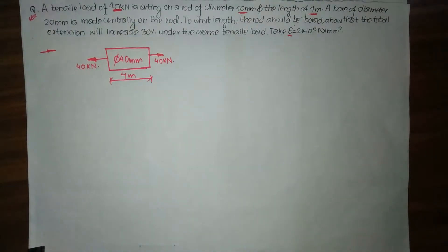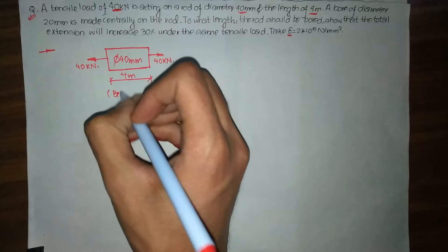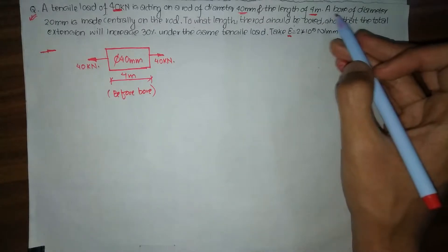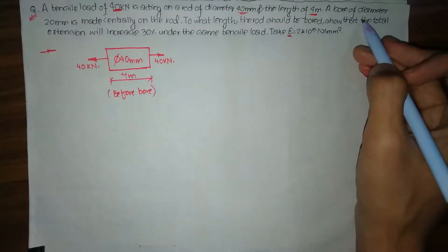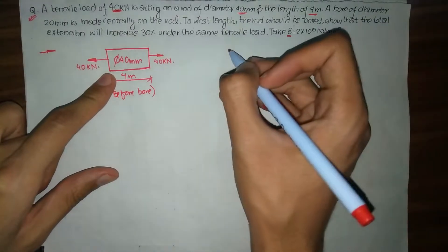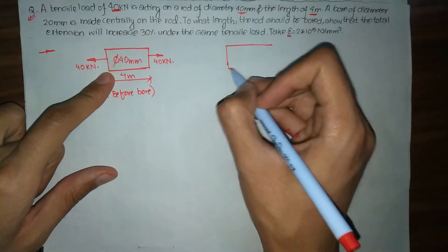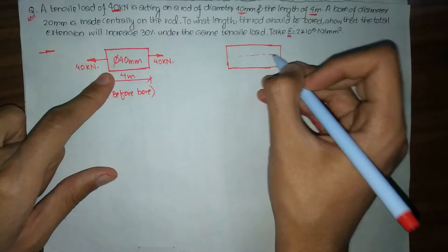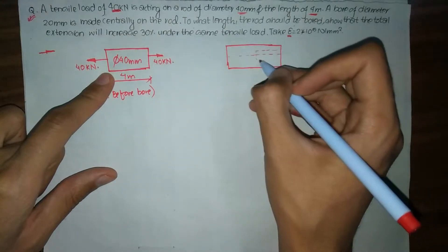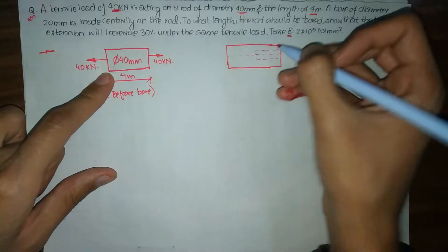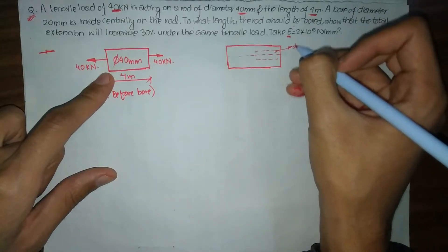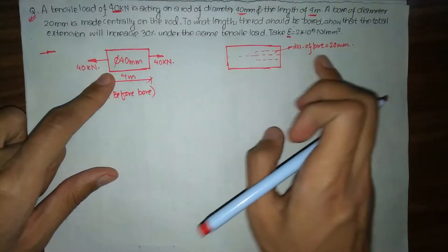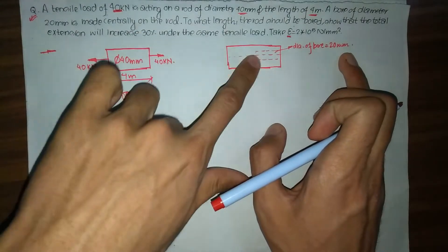So this figure represents our condition before the bore. Now let me draw the figure one more time for the after-bore condition. This is the same figure but now a bore of diameter 20 mm is made centrally along the central axis of the rod. So we have diameter of bore equals 20 mm.